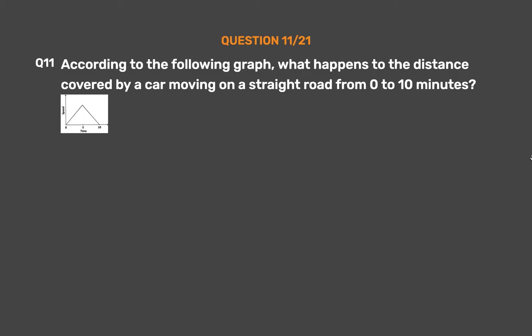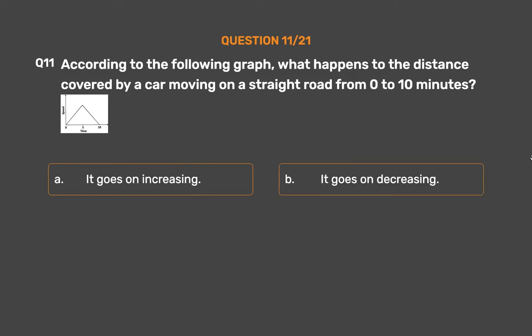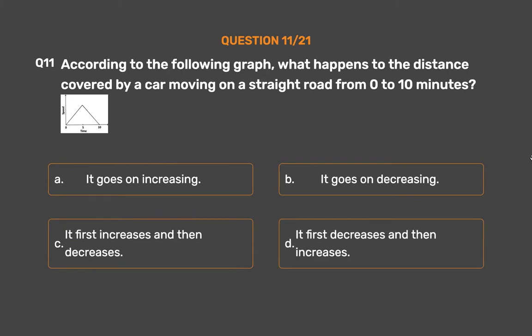Question No. 11. According to the following graph, what happens to the distance covered by a car moving on a straight road from 0 to 10 minutes? Option A: It goes on increasing. Option B: It goes on decreasing. Option C: It first increases and then decreases. Option D: It first decreases and then increases.